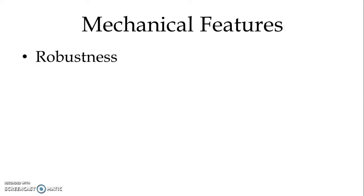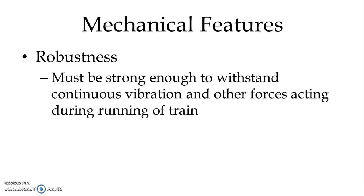The very first mechanical feature is robustness. The traction motor must be strong enough to withstand continuous vibration and other forces acting during the running of a train. Robustness of the traction motor is a very essential feature. The yoke of the traction motor must be fabricated from very good quality cast steel.